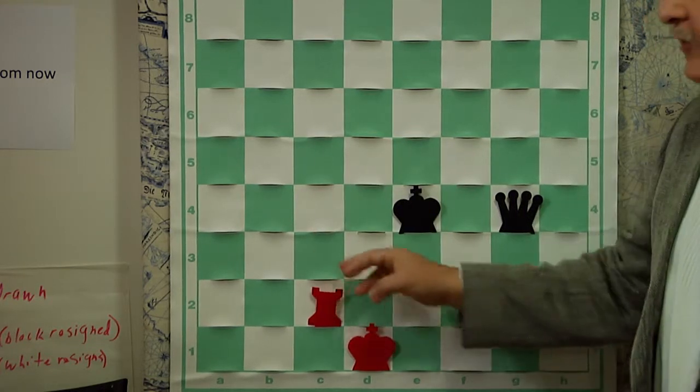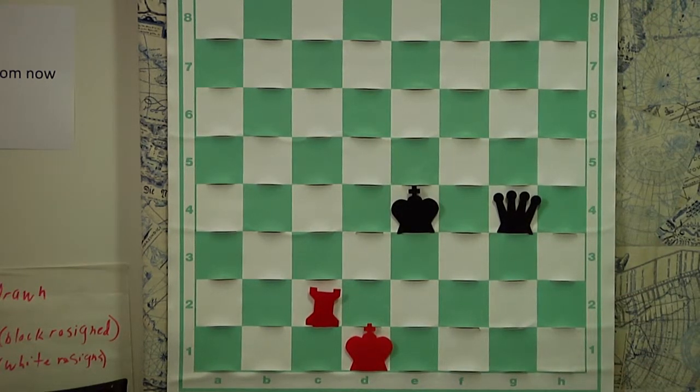So, if we remember the three things we can do, take the checking piece, run the king away, or block. Sometimes we use the word interpose for block. We can get out of check that way.